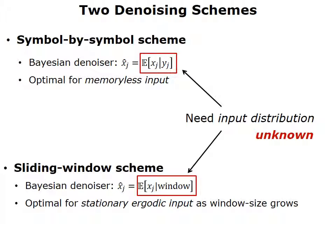At the same time, we need to condition on either yj or the window, and to do so we need to know the input distribution of these, and in many practical applications the input distribution is not available.